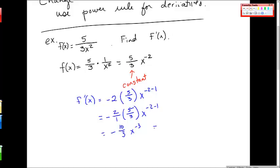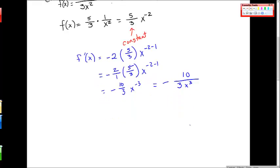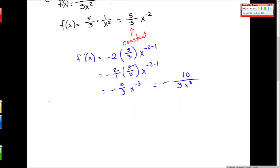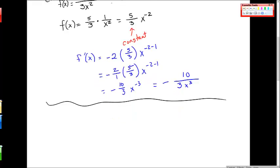Or you might see the solution written in final form as a full fraction: negative 10 thirds, and the 3 on the bottom, and then the x cubed on the bottom. We're just talking about changing forms to make the problem easier for us to work.